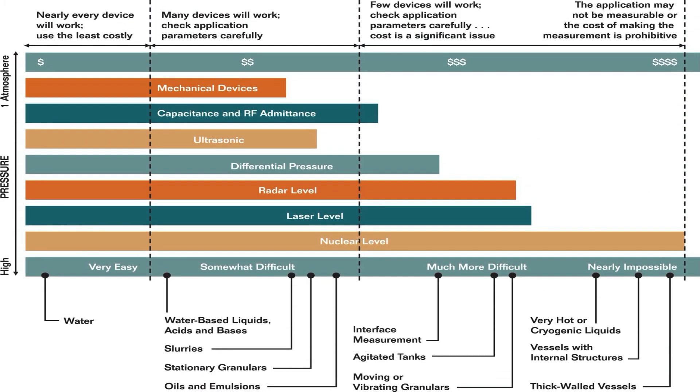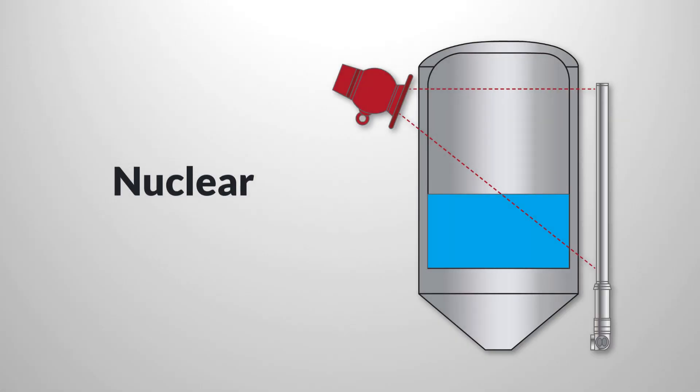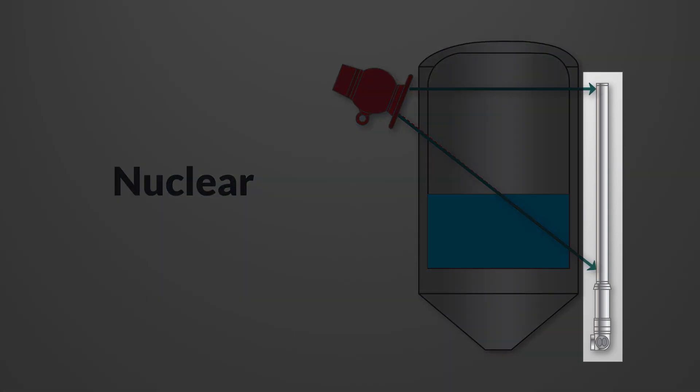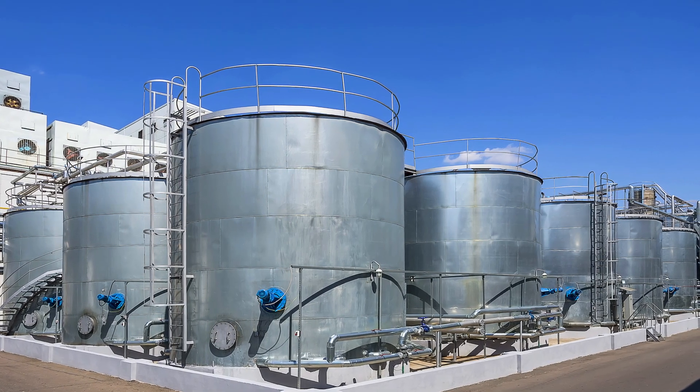According to our chart, there isn't much that can't be done using nuclear level technology, providing you can justify the cost, which includes significant safety and regulatory concerns. Nuclear level gauges infer level in even the harshest reactor conditions by passing radiation through a tank's walls and its contents to a detector on the opposite side. The radiation is attenuated in proportion to the amount of material traversed, which is correlated to the liquid level.